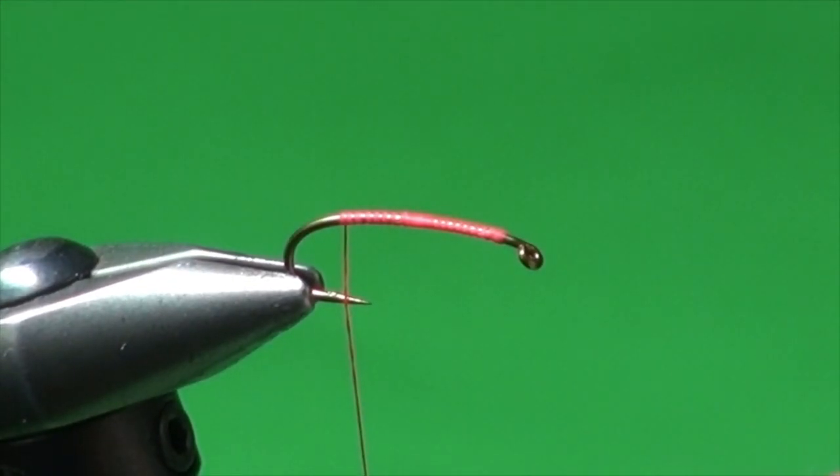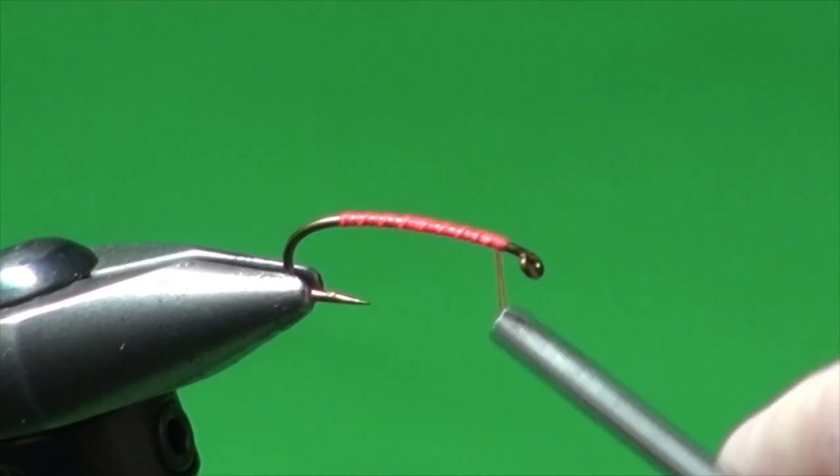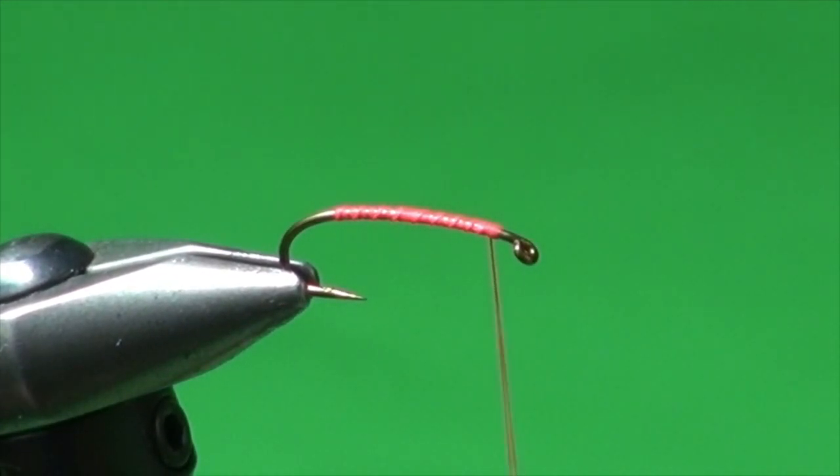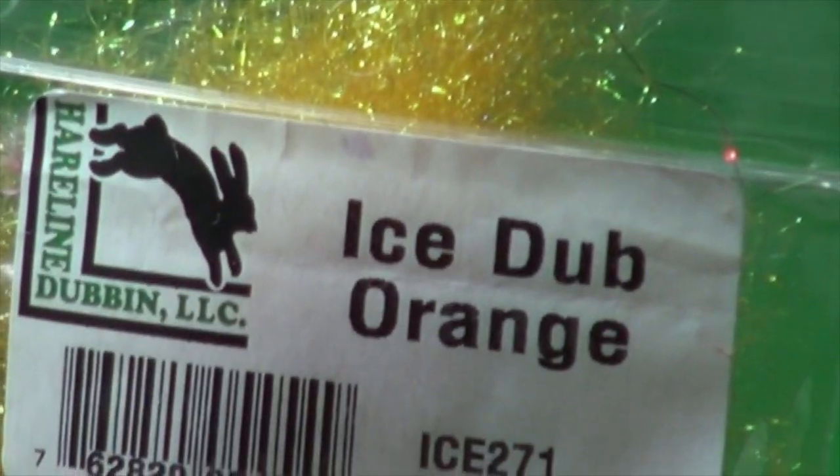Down about halfway between the point and the barb. And we're going to come back up. And we're going to dub a body from the front to the back to start with to put a foundation. So we're going to use some Orange Ice Dub.